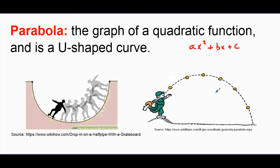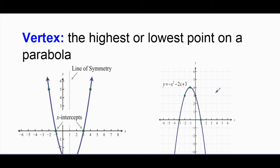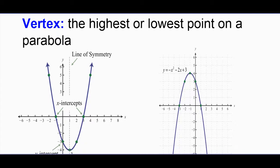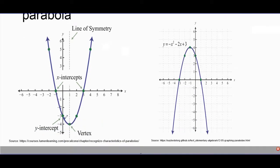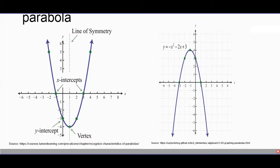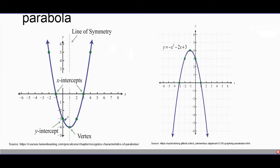For parabolas, we're going to look at their different characteristics and important features. The first important feature is called the vertex. The vertex is the highest or lowest point on a parabola. Looking at diagrams of parabolas, in one picture the vertex is labeled here, and in the other I can see the vertex right there — it's either the highest or the lowest point.